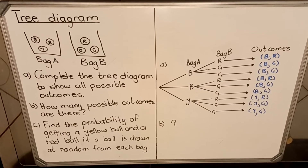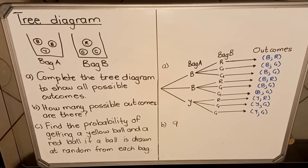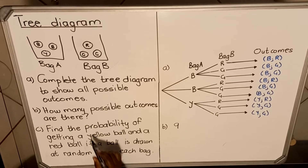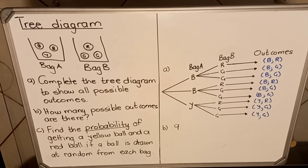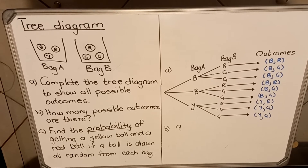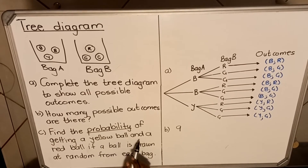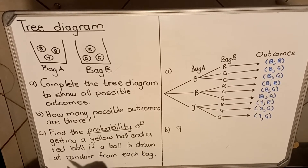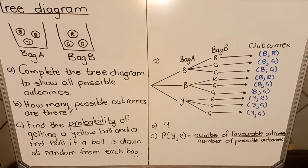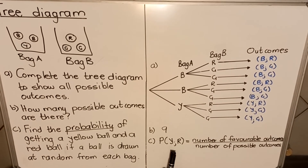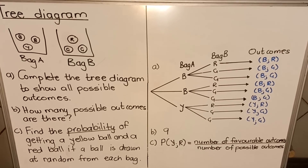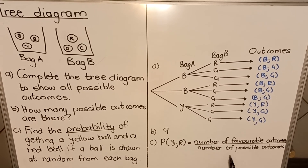Part C says find the probability of getting a yellow ball and a red ball if a ball is drawn at random from each bag. When you are asked for a probability, there's a formula: probability equals required outcome divided by total outcome. The required outcome here is yellow and red. The formula for probability is number of favorable outcomes — the outcomes that you want — divided by the number of possible outcomes.